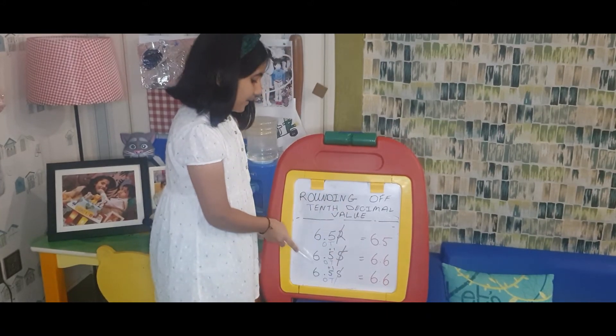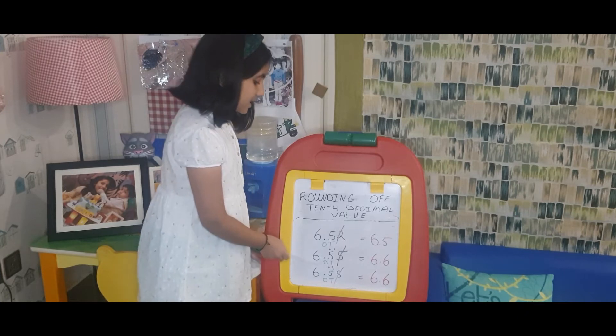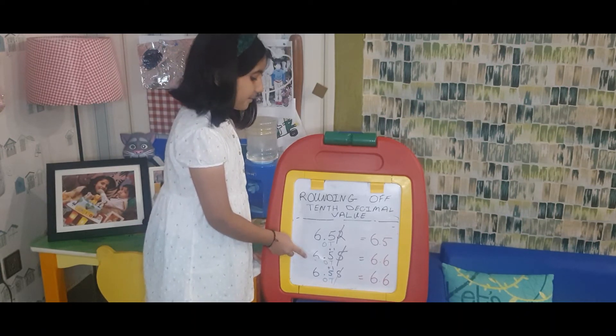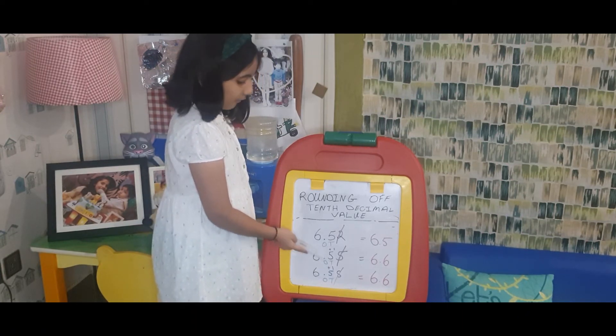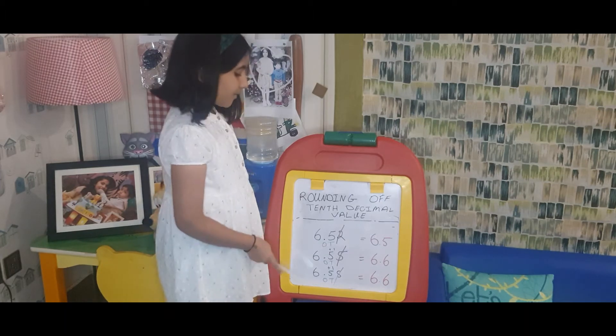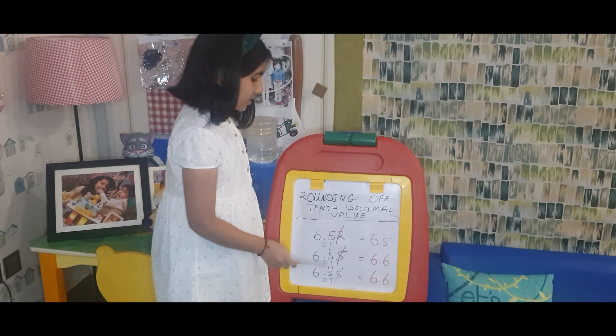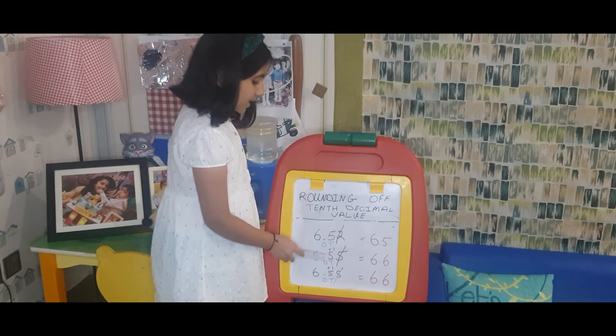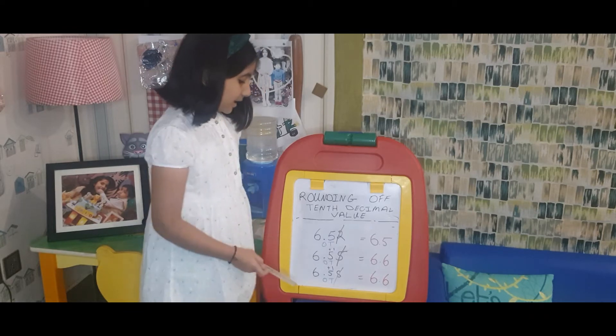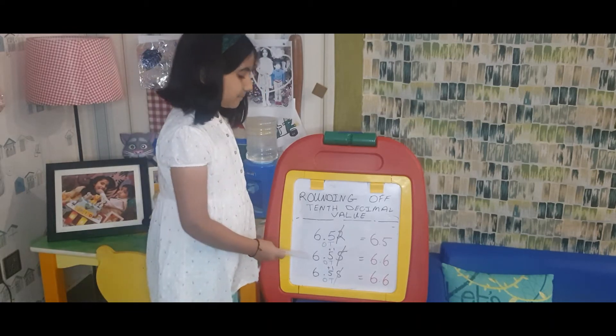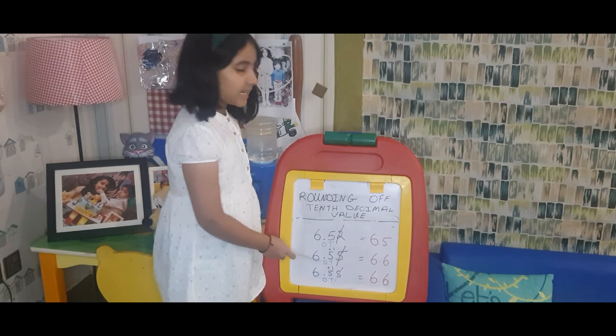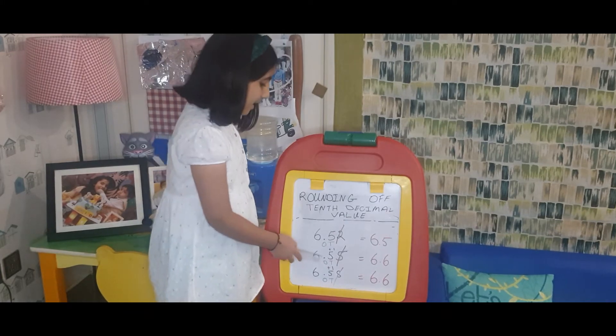Now we'll go to the next number, which is 6.55. We will find the tenth decimal value of this number. We will consider this decimal as one, so I'll write 'O' down here. Then the digit on the right side of one is ten, so I'll write 'T' down here under 5.